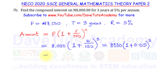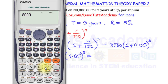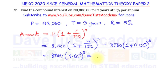So that gives us 8000 multiplied by 1.05 raised to power three. Putting that into our calculator — 8000 times 1.05 to the power of three — and pressing equals, we get 9261. So the amount after three years is 9261 Naira.